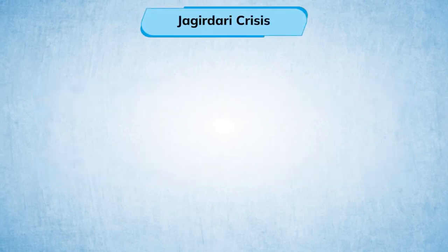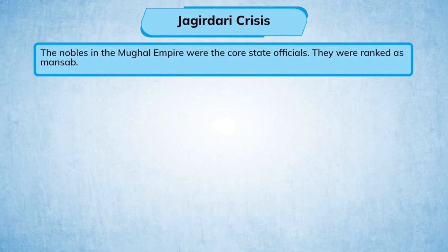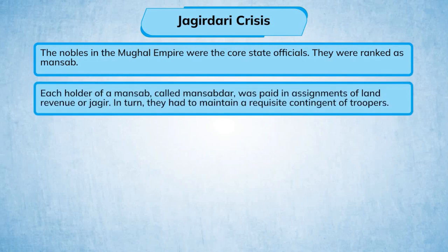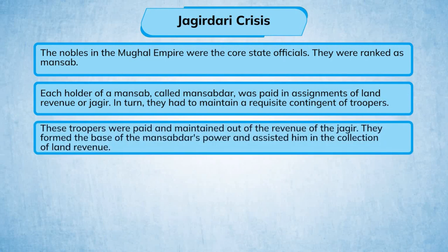Jagirdari crisis: The nobles in the Mughal Empire were the core state officials. They were ranked as Mansab, and each holder of a Mansab, called a Mansabdar, was paid in assignments of land revenue, or Jagir. In turn, they had to maintain a requisite contingent of troopers, who were paid and maintained out of the revenue of the Jagir. These troopers formed the base of the Mansabdar's power and assisted him in the collection of land revenue.